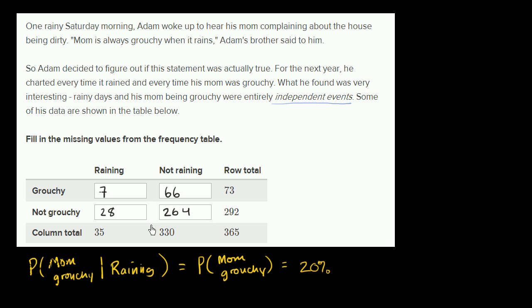So the key realization here is what he's saying he found was very interesting. Rainy days and his mom being grouchy were entirely independent events. That means that the probability of his mom being grouchy shouldn't matter whether it's raining or not. And our best estimate of the probability of his mom being grouchy on the total days is 20%. And so if the data is backing up that it's independent events, then the best way to fill this out would be his mom being grouchy on a rainy day or a not rainy day should be the same. And that's what we filled out right over here.